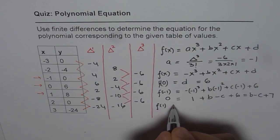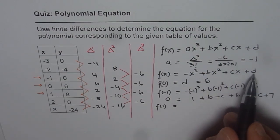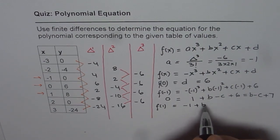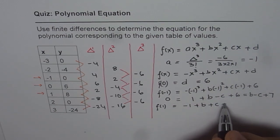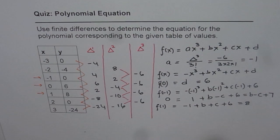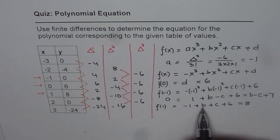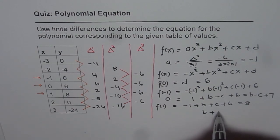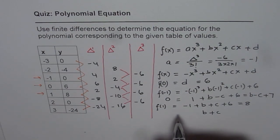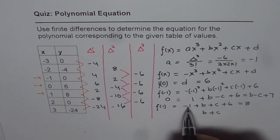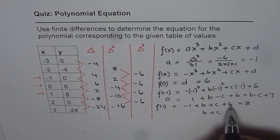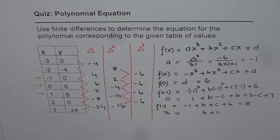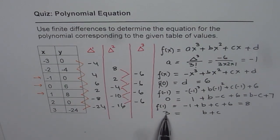For f(1), replacing x with 1 gives minus 1 plus b plus c plus 6 equals 8. Simplifying: b plus c equals 3. So we number these equations: equation 1 is b minus c equals minus 7, and equation 2 is b plus c equals 3.